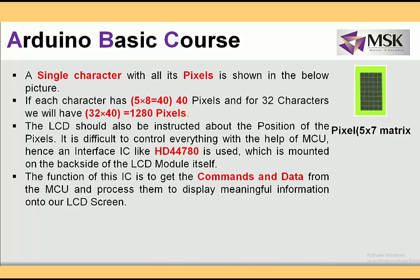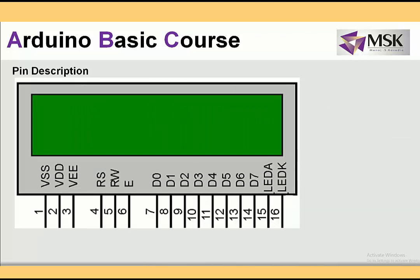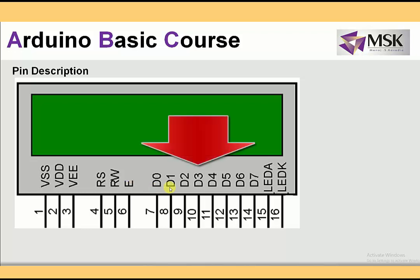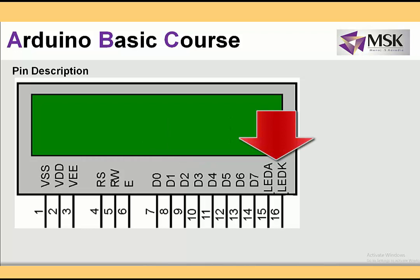Let's see the pin diagram of the LCD. This LCD has VSS, VDD, VEE, RS (register select), RW (read/write), E (enable), and then D0, D1, D2, D3, D4, D5, D6, and D7. The D0 to D7 pins are basically used for providing data, and LED A and LED K are for controlling the brightness of the backlight.